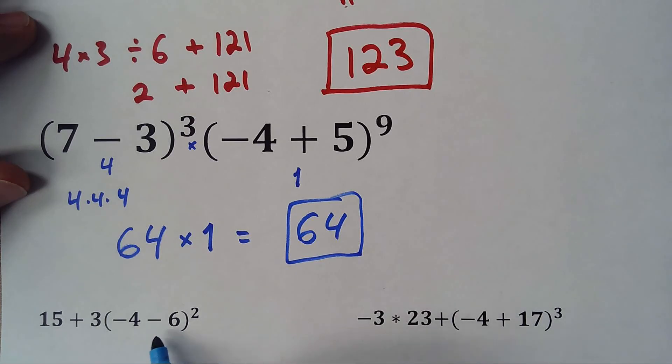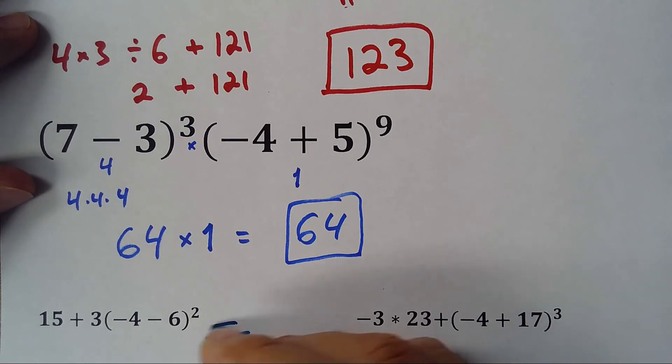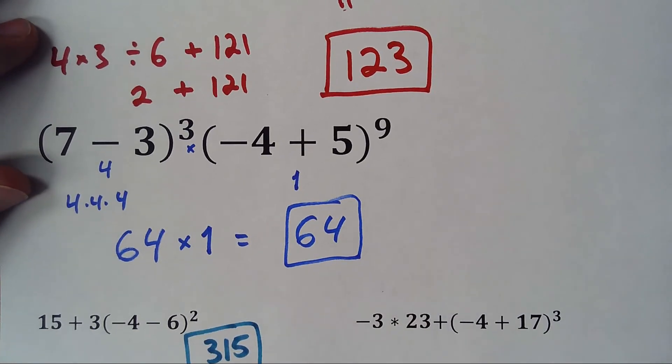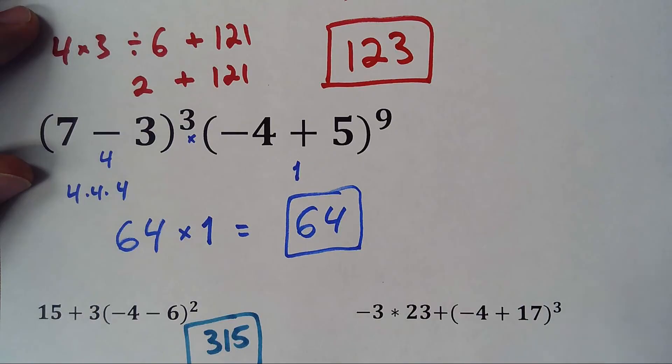So it will be, negative 10 squared is 100, 315, so this one is 315. And this one is, remember you have to pause the video, right? Because now you're not checking if you really got it or not. So this one will be...